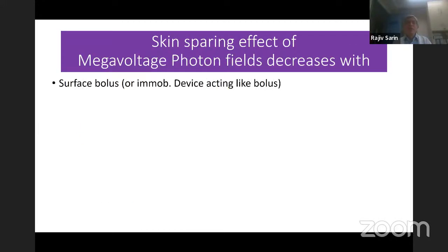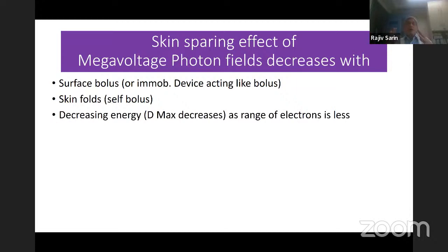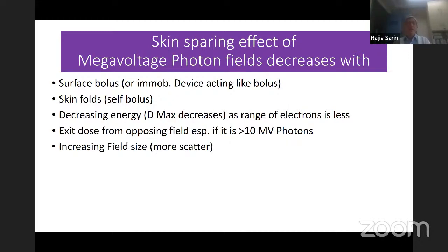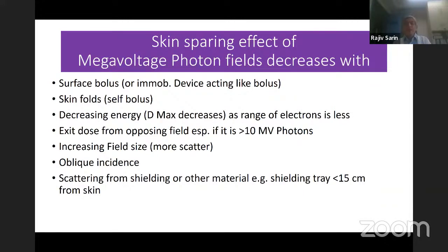Skin dose and the skin sparing effect are important. Whenever you use surface bolus, or when an immobilization device acts like a bolus, or when a skin fold acts like a self-bolus, the D-max decreases. Lower energy also decreases D-max because the range of electrons is less. Don't forget the exit dose from the opposing field — if the interfield separation is not large and you use 15 MV photons, the exit dose is also quite significant. Higher field size decreases the skin dose. Oblique incidence, as in tangential fields or in the limb, neck, or breast, gives higher skin dose. Scatter from the shielding tray also increases skin dose.